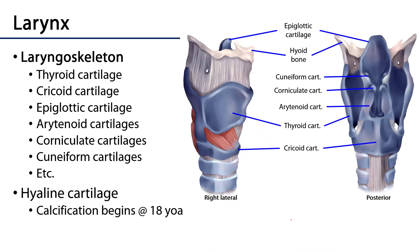The larynx consists of a laryngoskeleton, as well as intrinsic membranes and connective tissues, and various intrinsic muscles. Let's outline some of those elements of the laryngoskeleton, or the cartilaginous framework of the larynx.